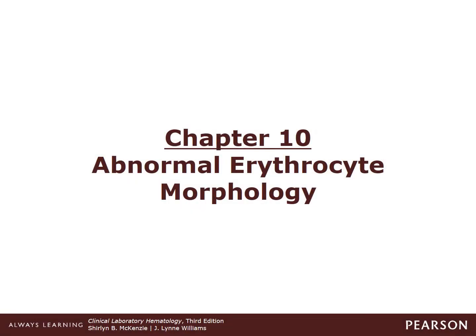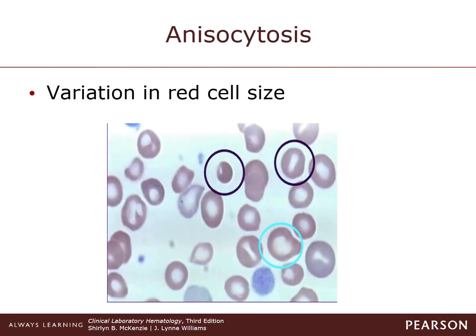We're going to discuss the abnormal erythrocyte morphology from Chapter 10. First, we're going to discuss the variations in the sizes of red cells as an abnormality, and this term is called anisocytosis.